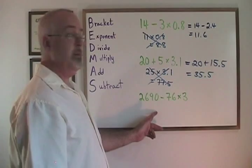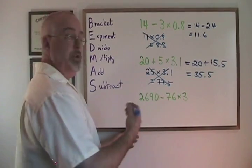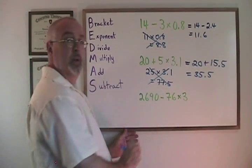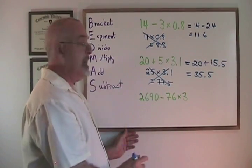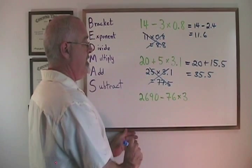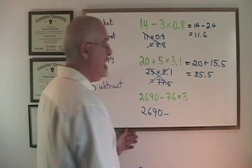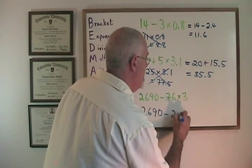For this bigger set of numbers, we will just show it the right way. We have a subtraction and a multiplication. The M for multiplication comes before the S for subtract in BEDMAS, so we must do this multiplication first. We have 2690 minus 76 times 3, which is 228.